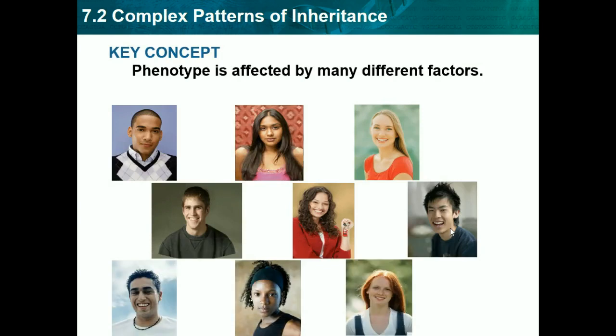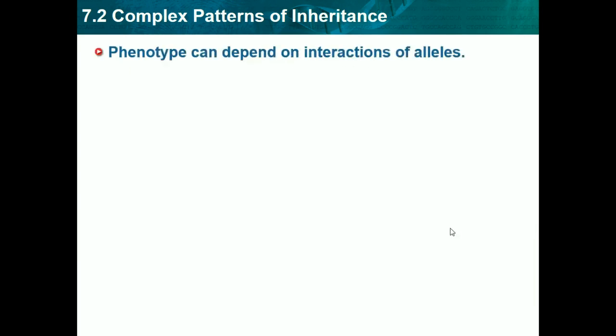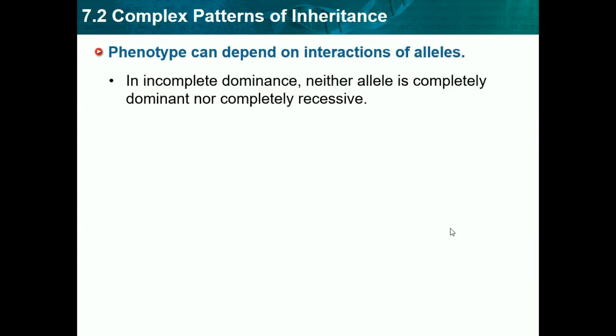Now we're on Section 7.2, which is Complex Patterns of Inheritance. Our key concept is that phenotype is affected by many different factors. Phenotype can depend on interactions of alleles. In incomplete dominance, neither allele is completely dominant nor completely recessive — in real life, it's not always black and white; there's a gray area that combines both.